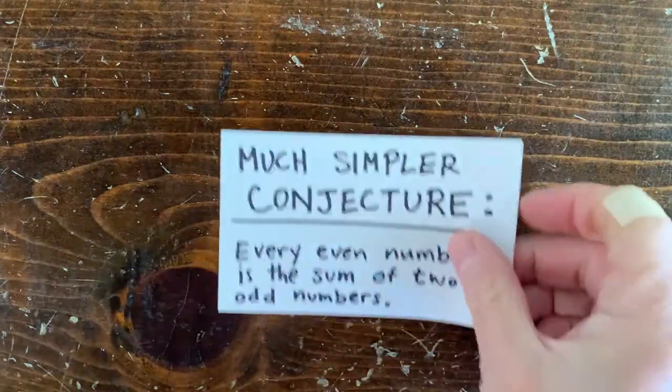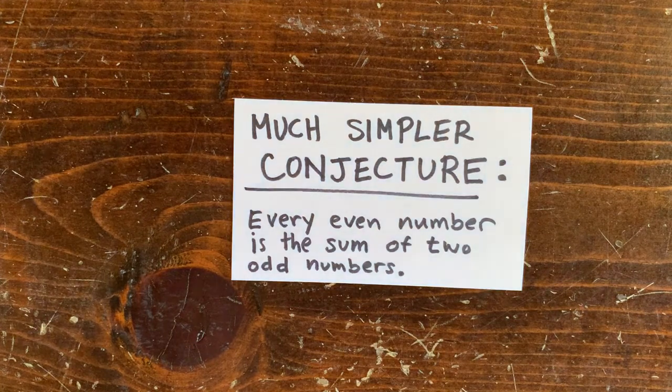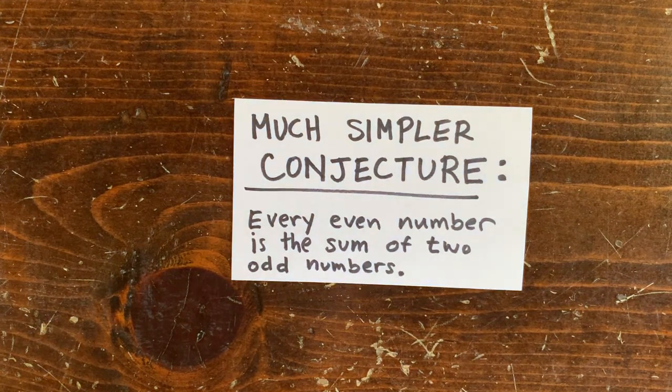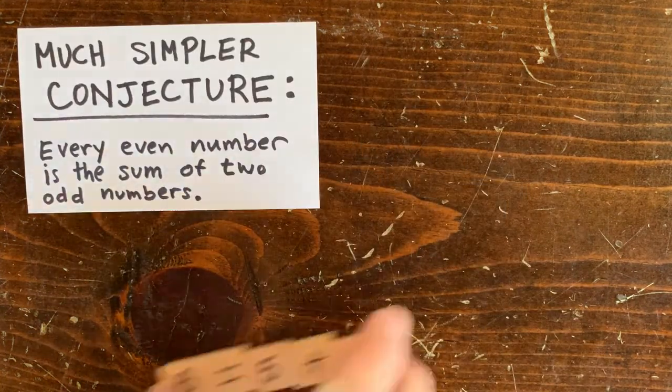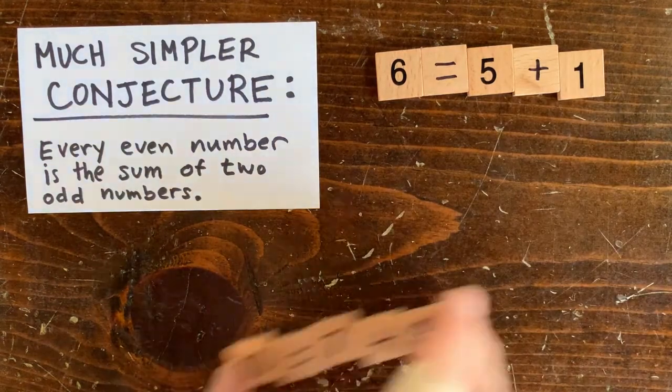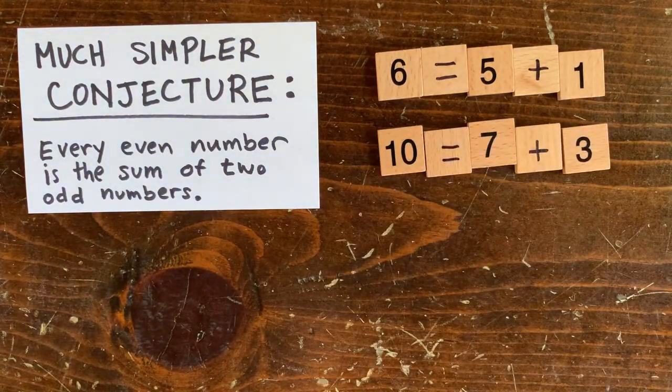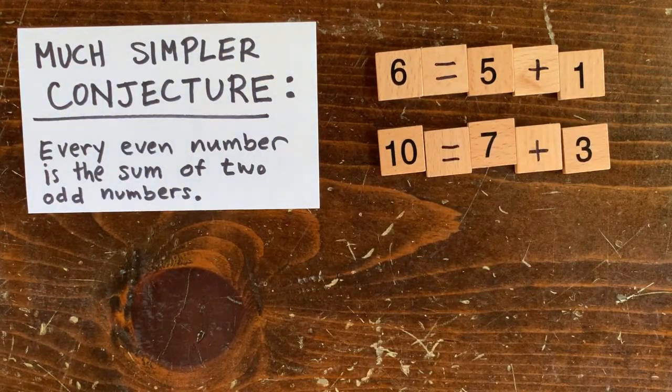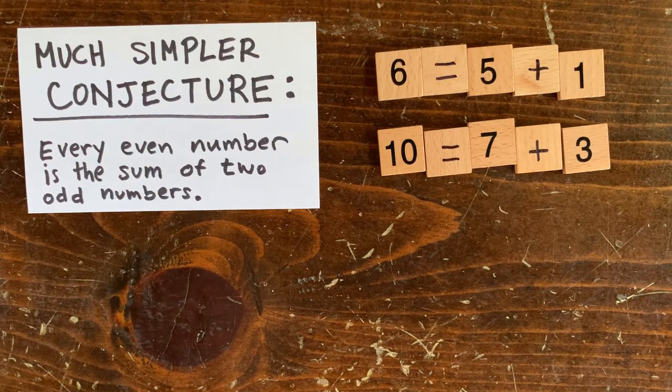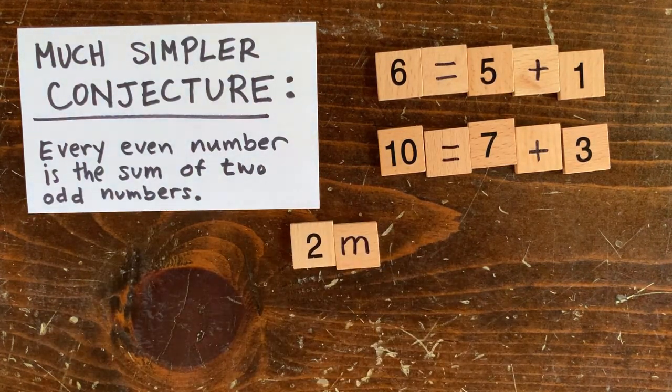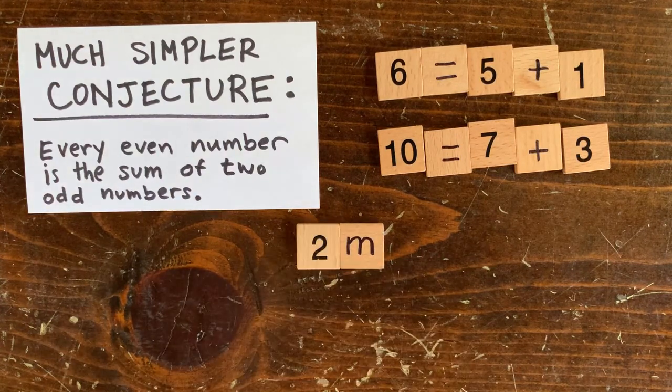For example, suppose I make a simpler conjecture that every even number is the sum of 2 odd numbers. I might convince myself with examples like 6 equals 5 plus 1 and 10 equals 7 plus 3. But we need an airtight argument that works for all numbers. So take any even number. Since it's even, we can write it as 2 times m.